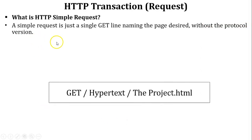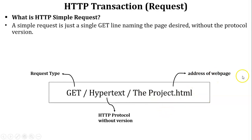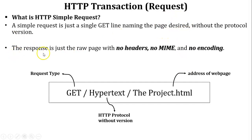Here is an example of an HTTP simple request. The first element is GET, which is the HTTP request type. The next element is the HTTP protocol without a version, and then the page address such as project.html — this is the address of the web page requested by the client. The response is just the raw page with no header, no MIME, and no encoding.